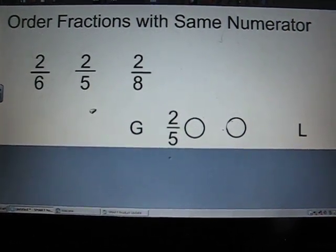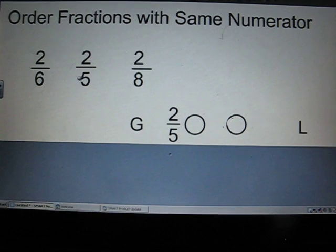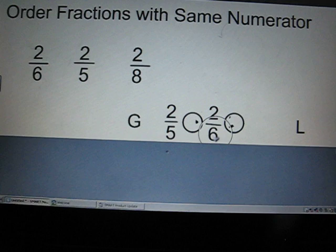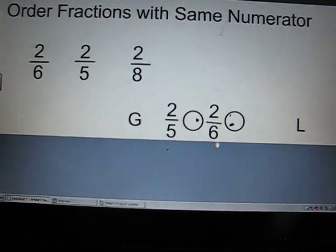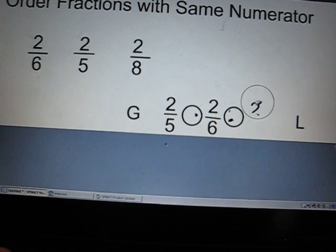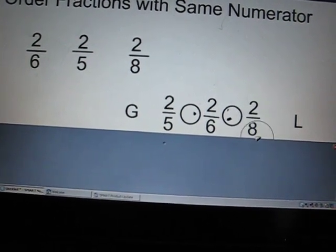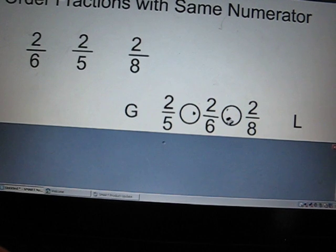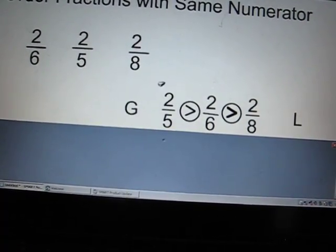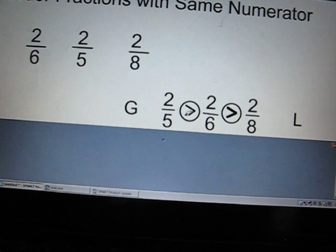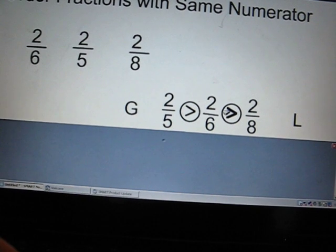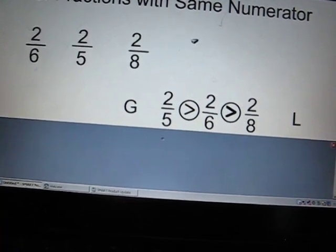So, then what's the next biggest fraction? Two-sixths. And then, of course, my smallest pieces are two-eighths. Of course, we need our greater than, less than signs. Every time, this says two-fifths is greater than two-sixths. And two-sixths is greater than two-eighths. So, we just put our fractions in order from greatest to least.